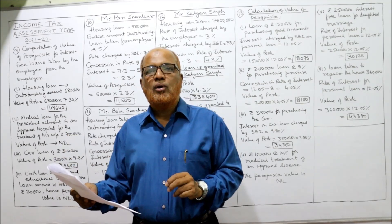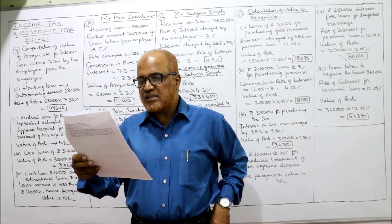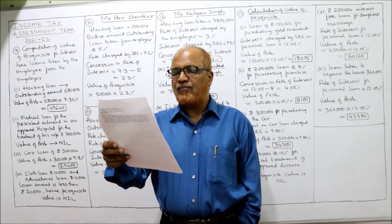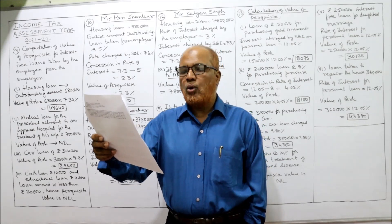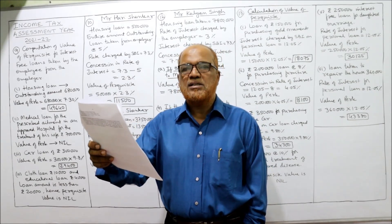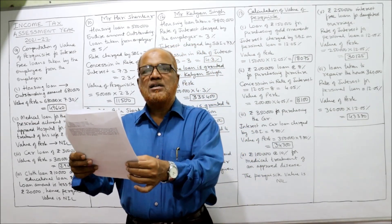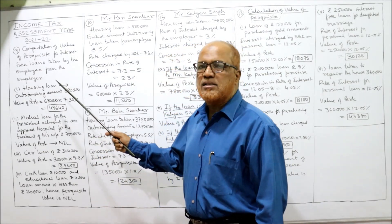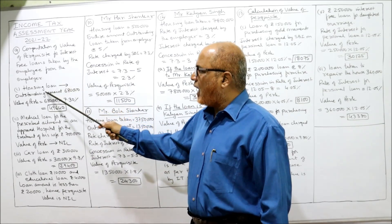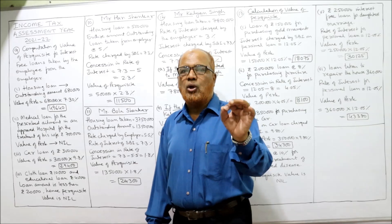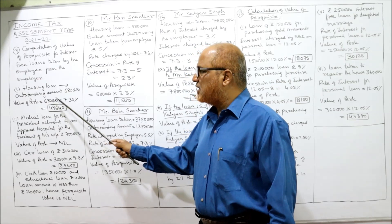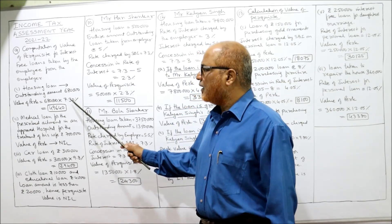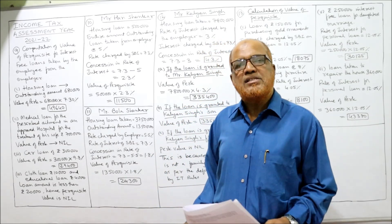Case 1 is a housing loan. The loan was 10 lakh rupees but the outstanding amount is 6 lakh 80,000, so interest will be charged on 6 lakh 80,000. What is the rate of interest charged by SBI for housing loan? It is 7.3%. So, computation: outstanding amount 6,80,000 × 7.3% = value of perquisite ₹49,600. First case completed.